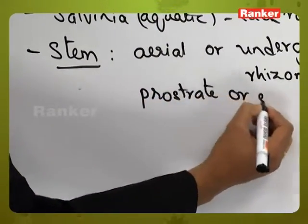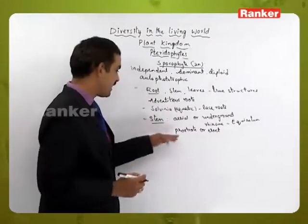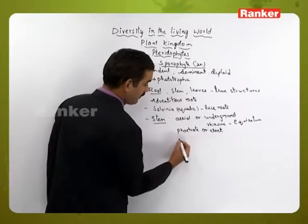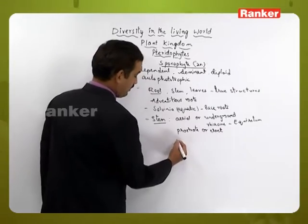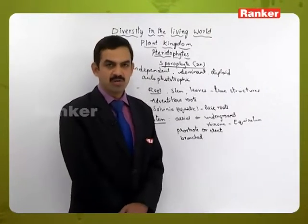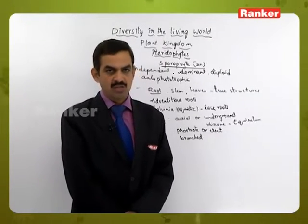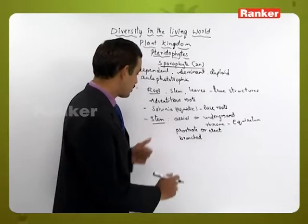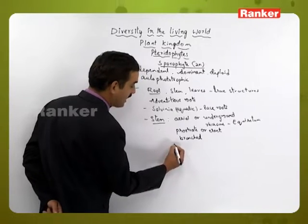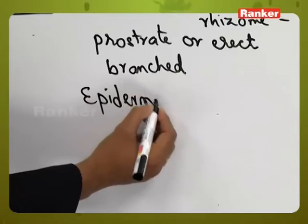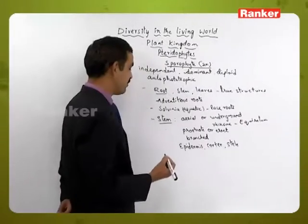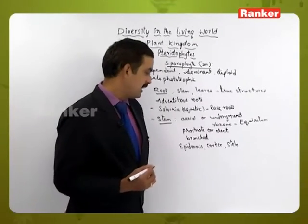The stem may be either prostrate or erect. Prostrate means it will creep on the soil surface, and erect means it will stand straight. The stem is generally branched and produces appendages, which are called leaves. If you see the internal structure of the stem, it basically shows three parts: epidermis, cortex, and stele.